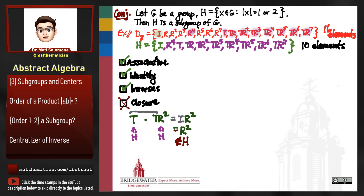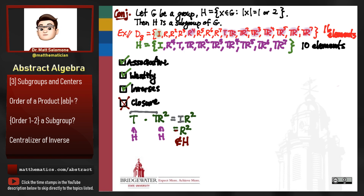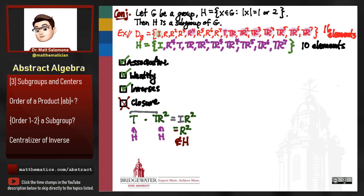Therefore my conjecture is definitely not true: the set of elements of order 1 or 2 is not necessarily going to be a subgroup of G. Maybe we can back up a step — anytime we have a false conjecture, there are two reasons: the hypotheses were not strong enough, or the conclusion is too strong. Chances are we need to make a stronger assumption in the hypothesis, perhaps something we need to know about G.